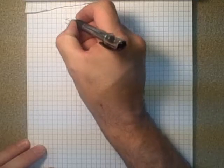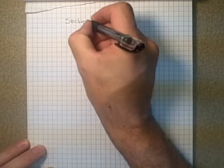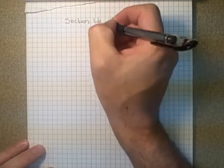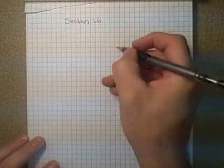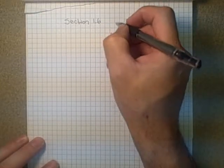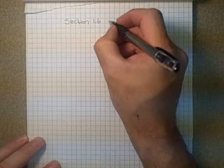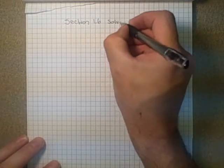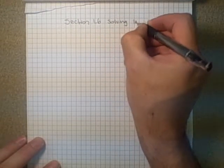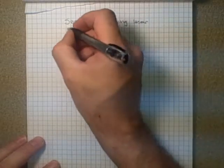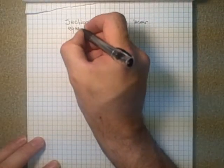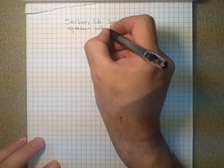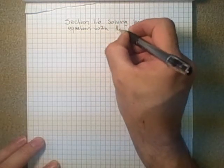This is section 1.6 in the Math A30 course, and it's solving linear equations with rational numbers in them.